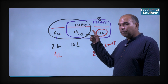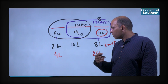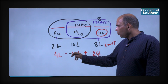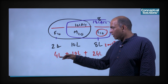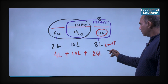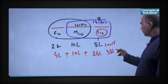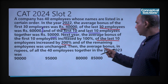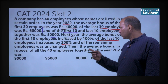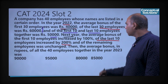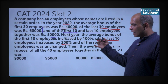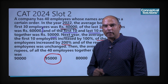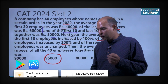The remaining employees had the same average bonus, so their total bonus remains the same. Therefore in 2023, the total bonus of all employees is 4 + 10 + 8 = 38 lakhs, divided across 40 employees, which gives an average of 95,000. That's the correct answer.